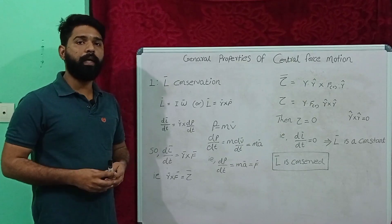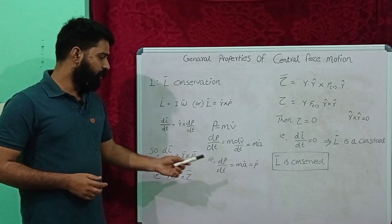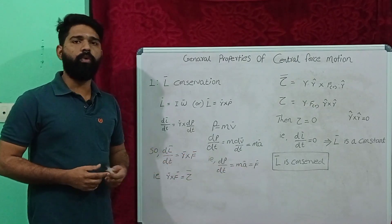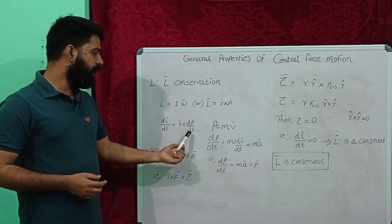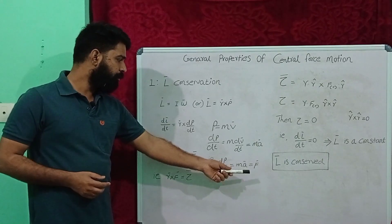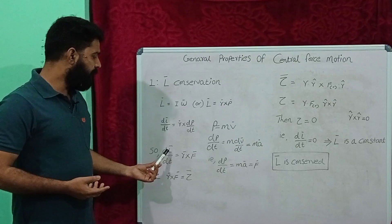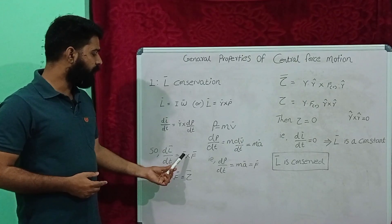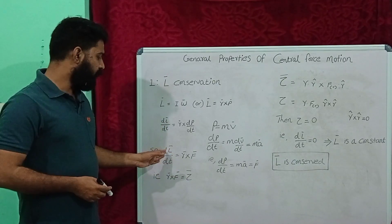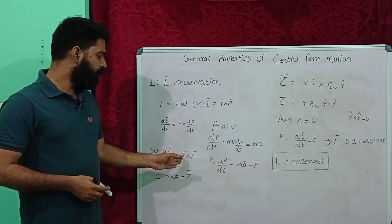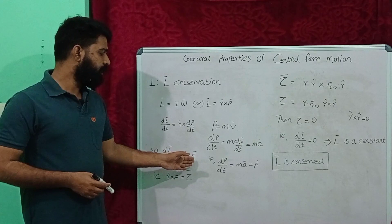According to Newton's law, mass times acceleration equals force. So we get dP/dt is equal to force. Therefore, R cross dP/dt, where dP/dt is force, gives us dL/dt equal to vector R cross vector F. That means the first differential of angular momentum equals the position vector cross force.